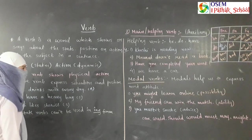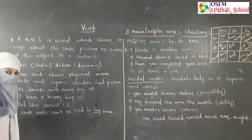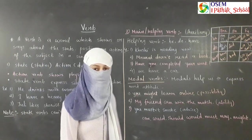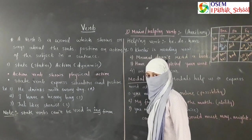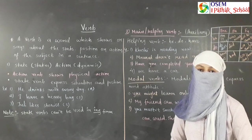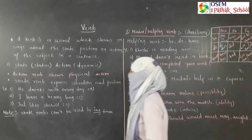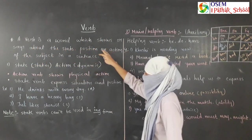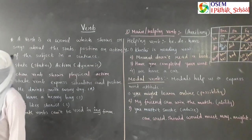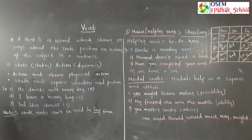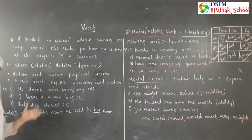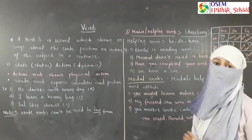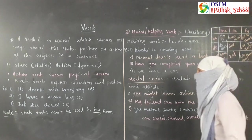Verb is a very important part of a sentence. Verb can describe tense — without verb we cannot recognize tense and we cannot make a sentence. So verb is the heart of a sentence. A verb is a word which shows or says about the state, position, or action of the subject in a sentence.